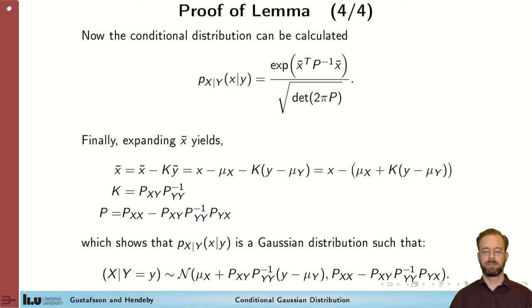And if we now put it all together, we see that the new distribution is given by a Gaussian distribution with exactly the form stated in the lemma.